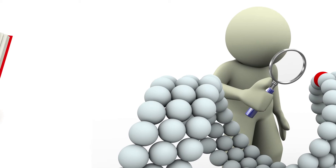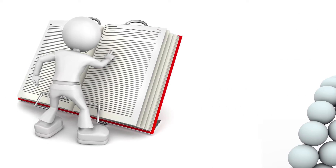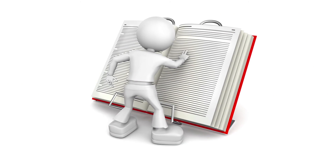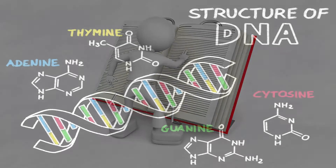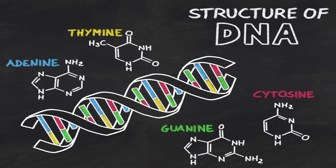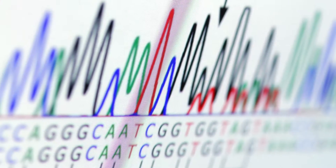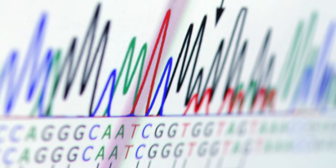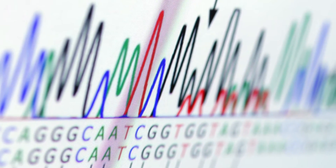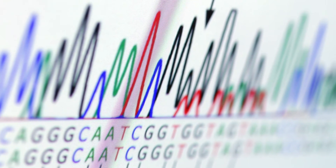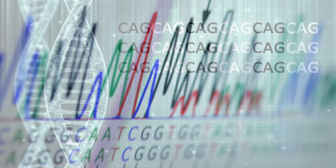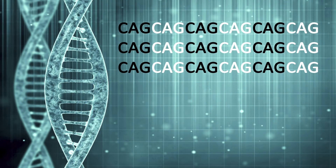We read genetic instructions a little like the way we read a book. The genetic alphabet has four letters — A, C, G, T — called bases. Every gene is written in a series of three bases called triplets. In the HTT gene, a triplet of the letters CAG is repeated several times.